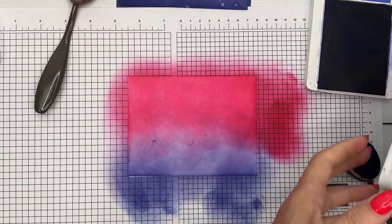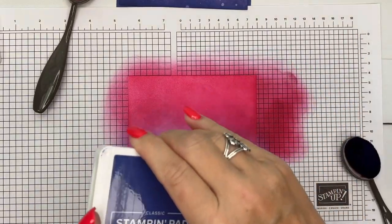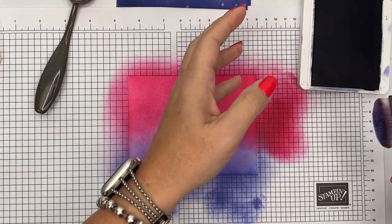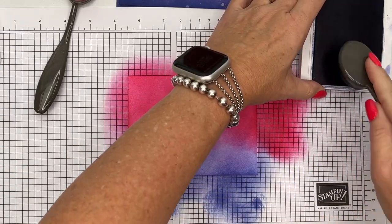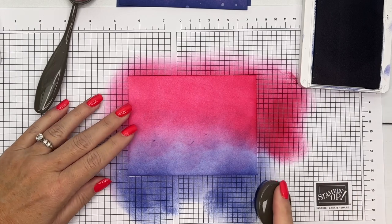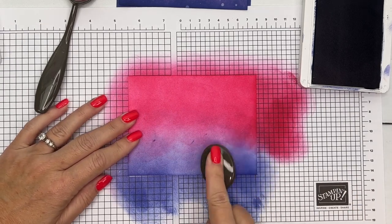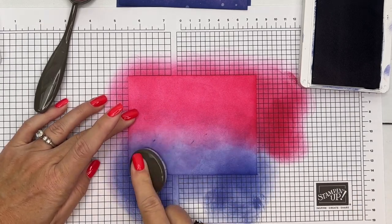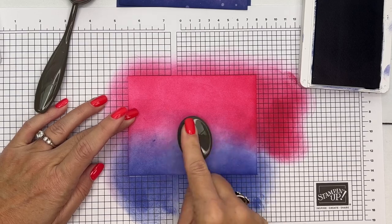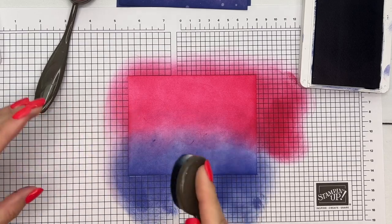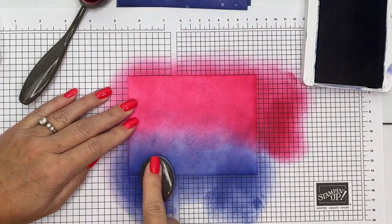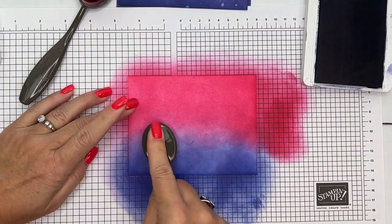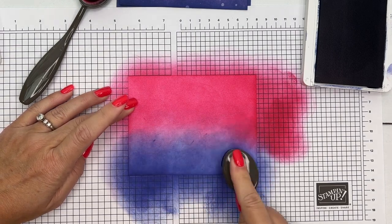Okay, now let's switch over to Starry Sky. Starry Sky and Orchid Oasis are both in colors. They will be leaving us at the end of the 2024 catalog period, which is in the spring. So if you love these colors as much as I do, make sure you stock up on all of the things that we have that coordinate. We have ribbon, we have ink, paper, markers, we have all of it.